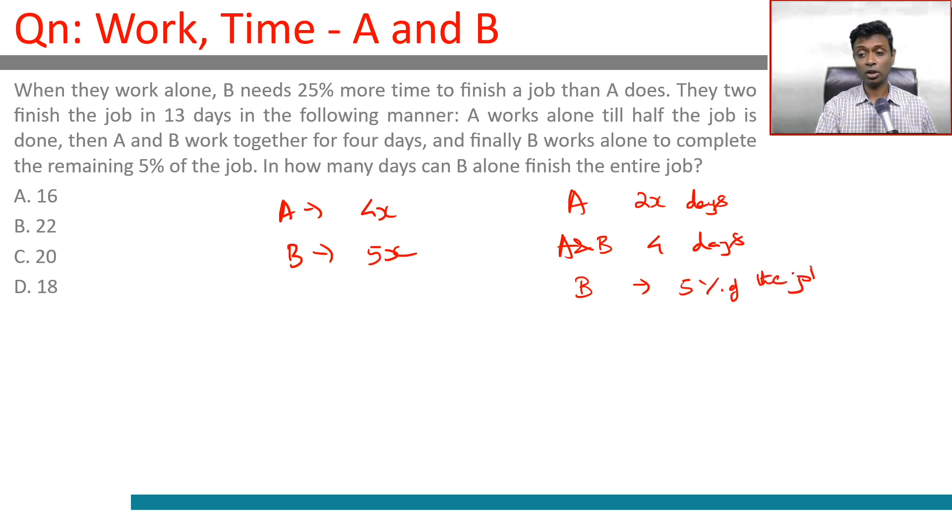It's a wonderful question because the definitions are very different - it says half the job, 5% of the job, and they work together for 4 days. If A and B are working together, in one day they'll finish 1/4x plus 1/5x.